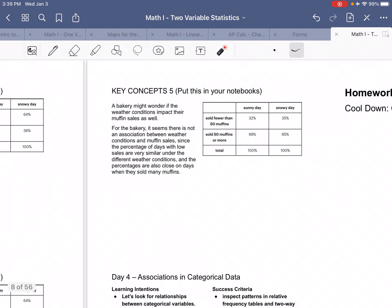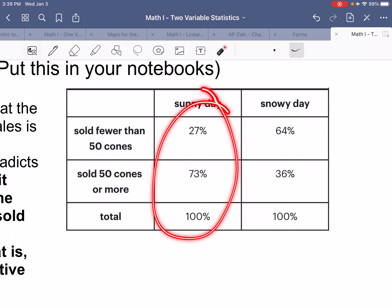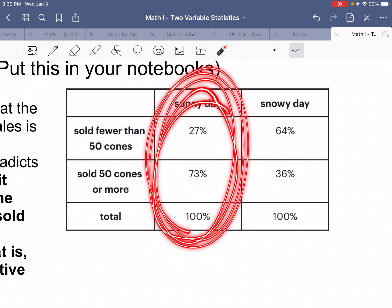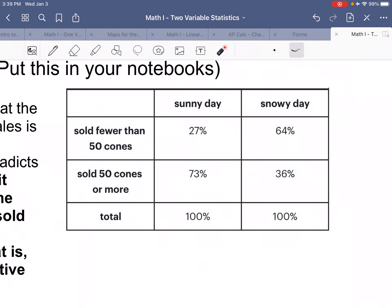But let's say we did find a percentage. Looking at this, our 100% category is just for sunny days. Our 100% here is just for snowy days. And we can see the percent is much higher on a sunny day for 50 cones or more compared to a snowy day, which has a much higher percent with fewer than 50 cones.